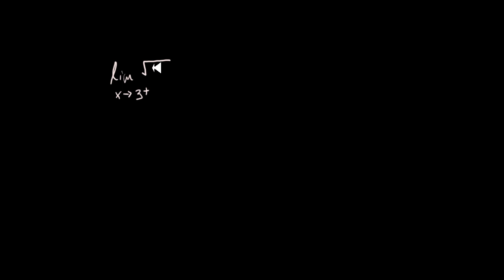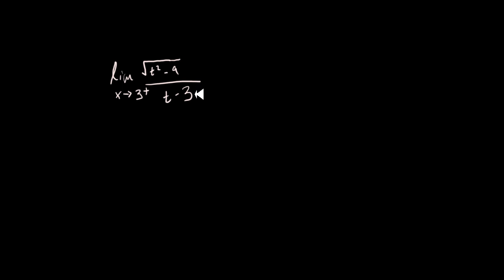The limit when X approaches 3 from the right of the square root of T squared minus 9, divided by T minus 3. Now I'm also showing you how to solve limits while explaining the difference between approaching from the right versus the left. When you look at this limit, it looks like it can be factored.